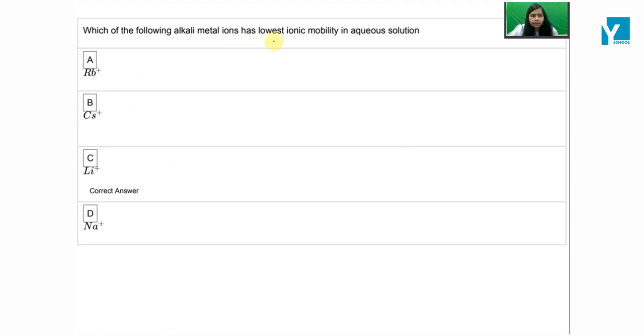Which of the following alkali metal ions has lowest ionic mobility in aqueous solution? We all know that mobility, what is the first tendency to move?